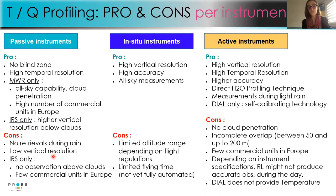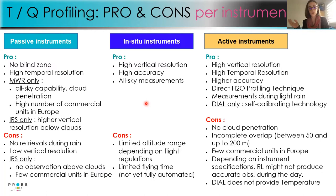Drawbacks of passive instruments include: no infrared retrieval during rain, low vertical resolution, no observation above clouds for infrared spectrometers, and few commercial units in Europe for infrared. UAVs provide high vertical resolution, high accuracy, and all-sky measurements, but the main drawbacks are limited altitude range due to flight regulations and limited flying time, as these systems are not yet fully automated.